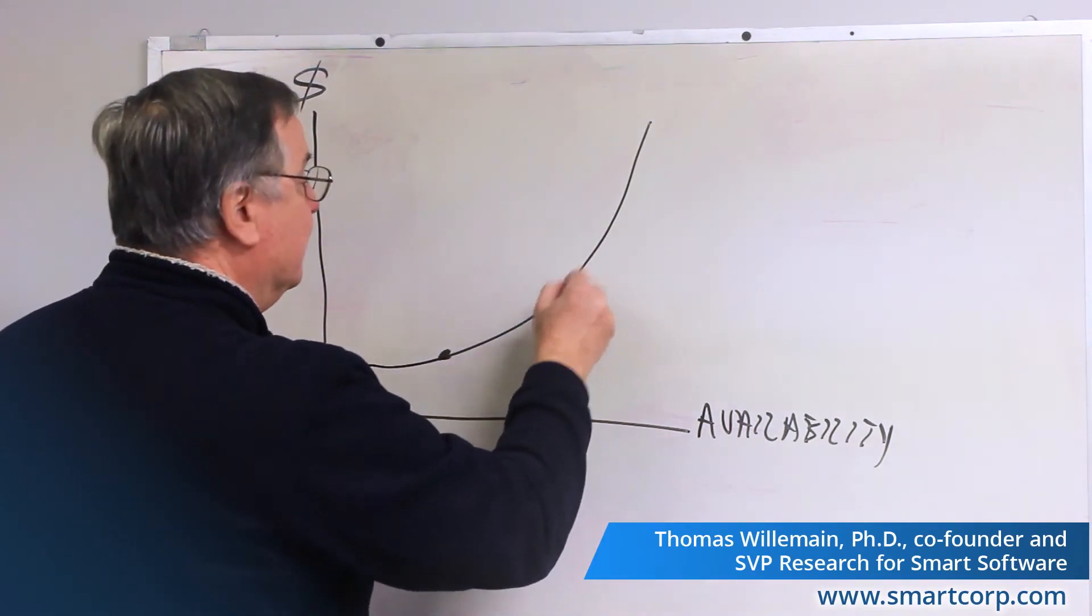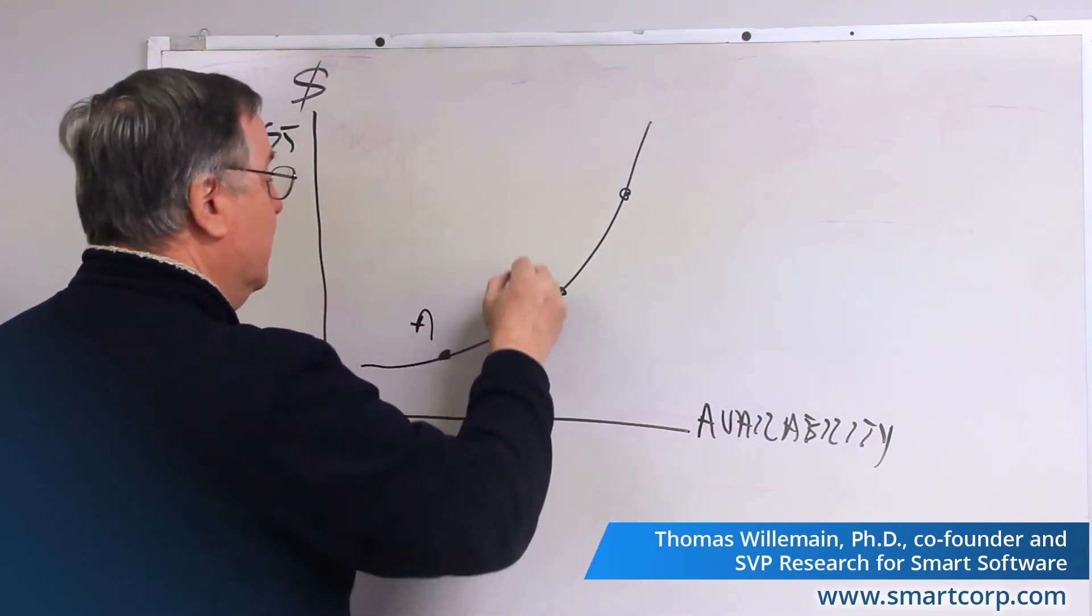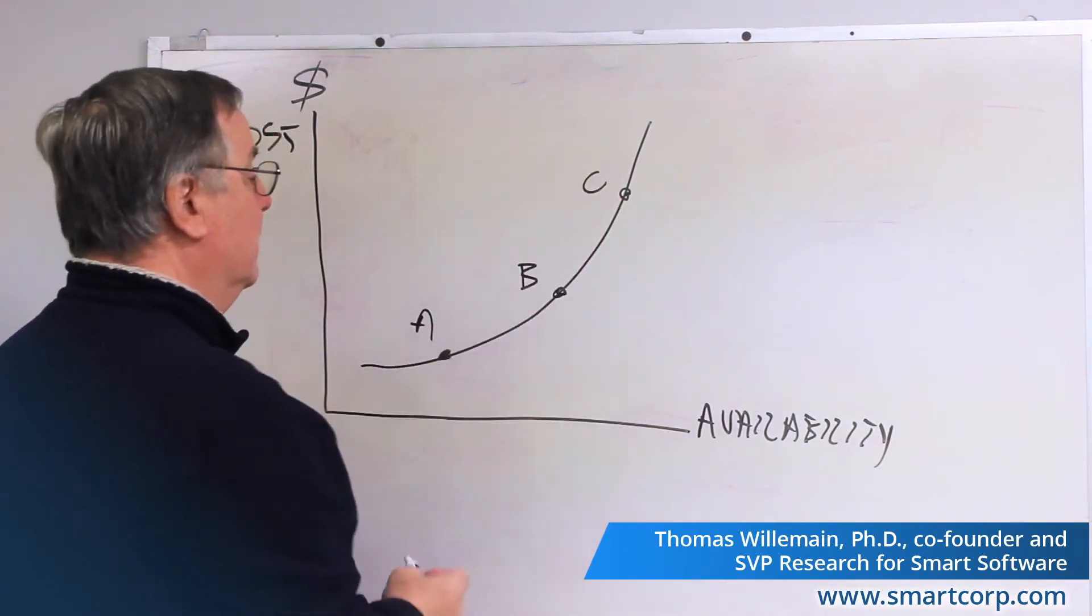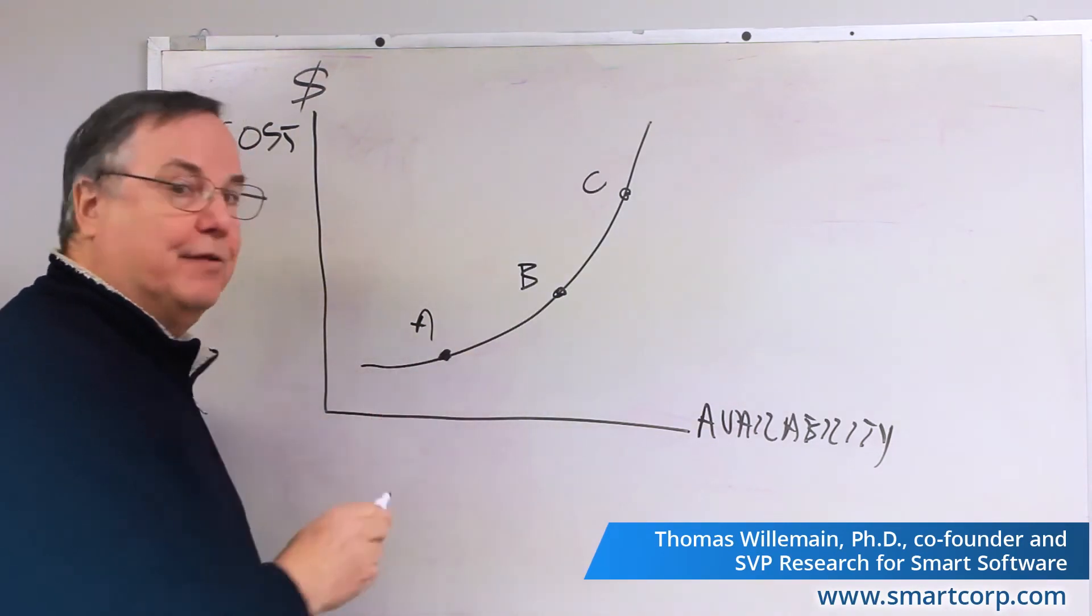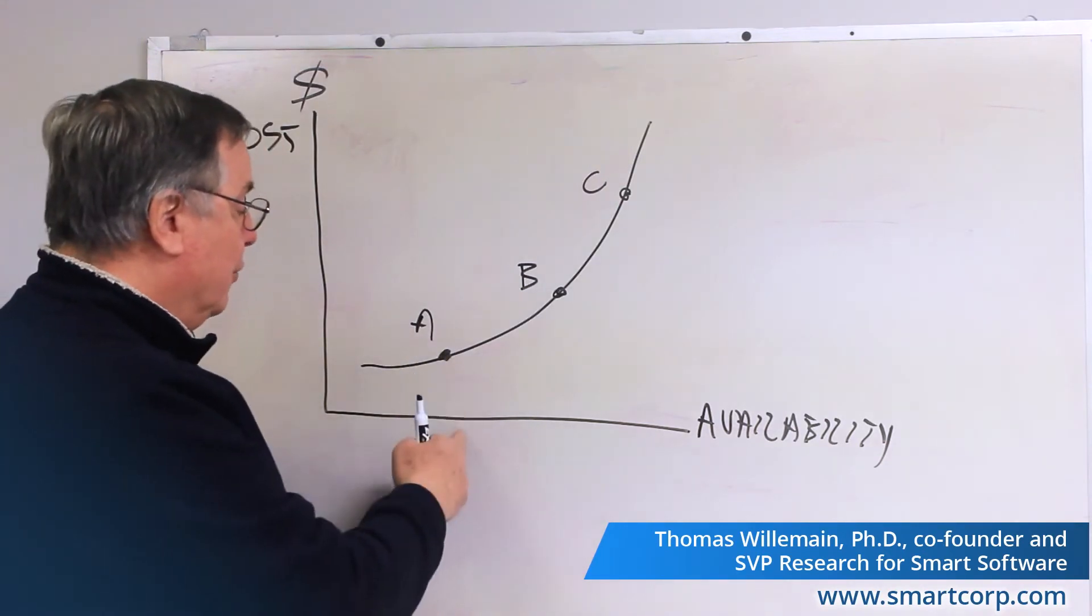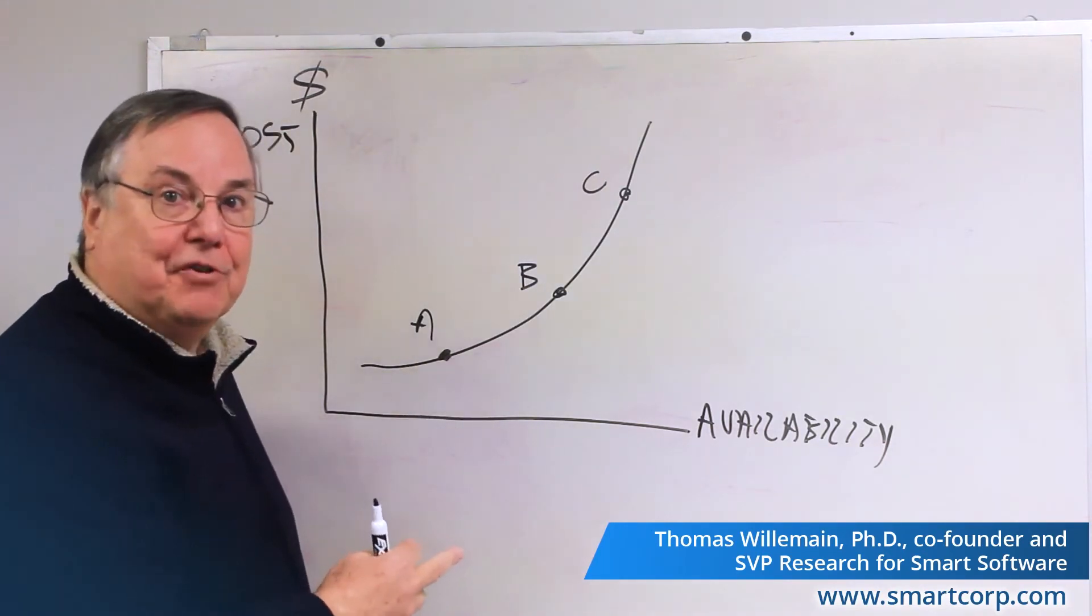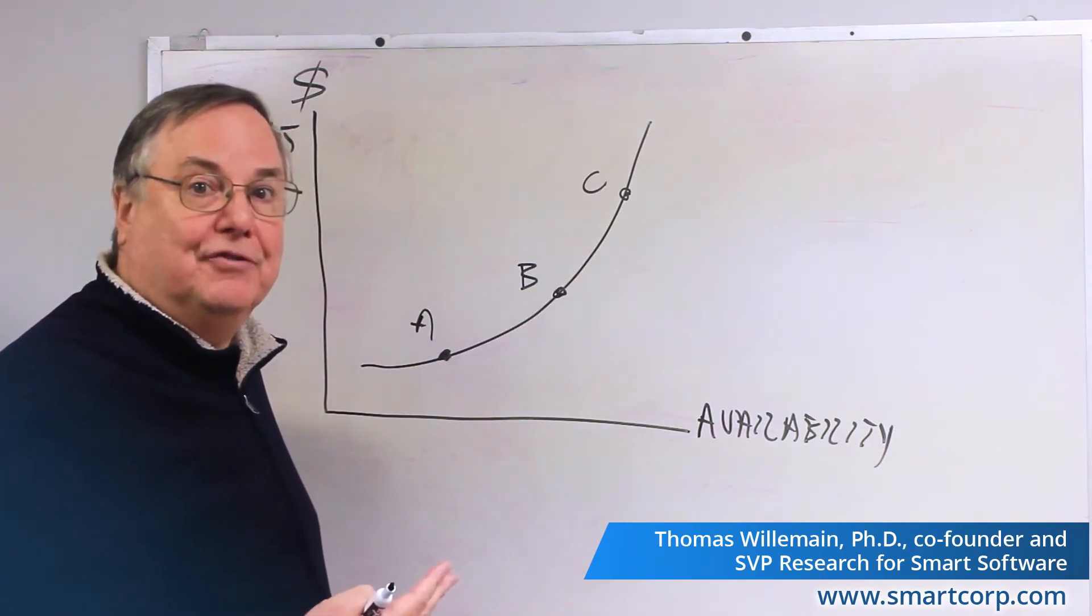So we can imagine three places on this curve. There's A, B, and C. At point A, you're spending very little on the care and feeding of inventory. But you're also not doing very well by your customers, because there might be a very high chance that you'll stock out when somebody wants something.